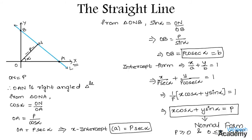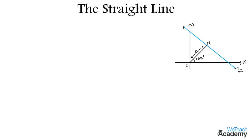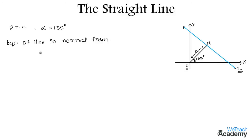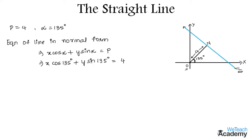Now let us proceed and discuss an example. Here we have a straight line L, the origin, and the perpendicular distance P is equal to 4, and the given angle alpha is equal to 135 degrees. By using both these values we can find the equation of a straight line in normal form, which is x·cos alpha + y·sin alpha = P. Substituting the given values we get x·cos 135° + y·sin 135° = 4.